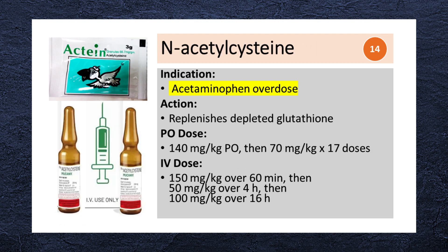N-acetylcysteine is used in cases of acetaminophen overdose. It replenishes depleted glutathione levels, protecting the liver from the toxic effects of acetaminophen metabolites. It is administered either orally or intravenously. The oral loading dose is 140 mg/kg, then 17 more doses every 4 hours of 70 mg/kg. The intravenous regimen is a loading dose of 150 mg/kg over 60 minutes, followed by 50 mg/kg over 4 hours, then 100 mg/kg over 16 hours.